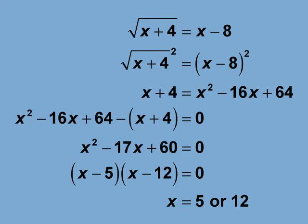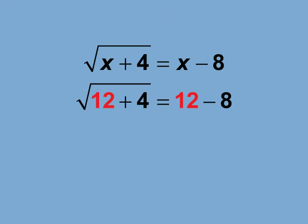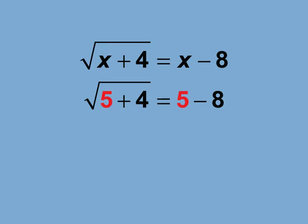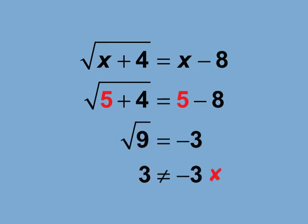Let's circle back and plug in these solutions into the original equation. For x equals 12, the solution results in a true equation. However, for x equals 5, the solution does not result in a true equation. This means that x equals 5 is an extraneous solution.